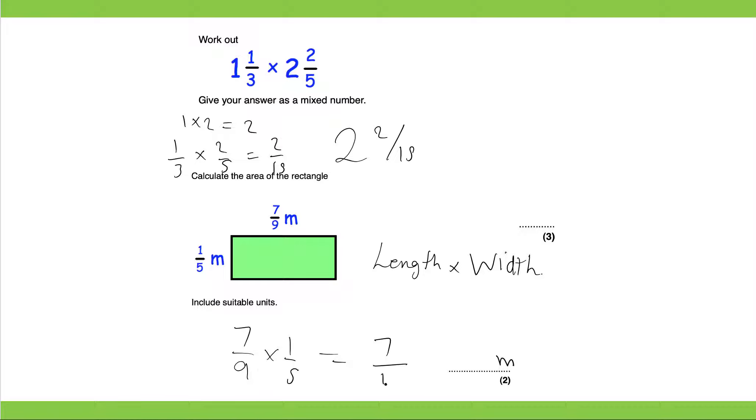So we have seven ninths multiplied by one fifth. 7 over 45. That would be our answer because we cannot simplify that down any further.